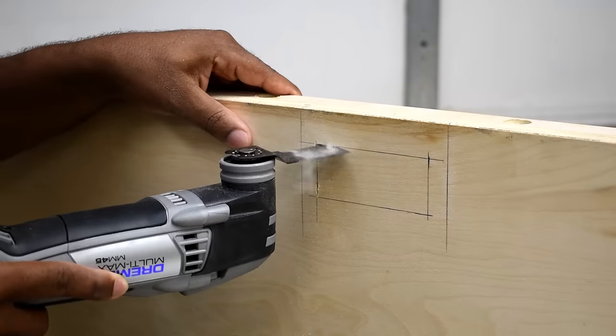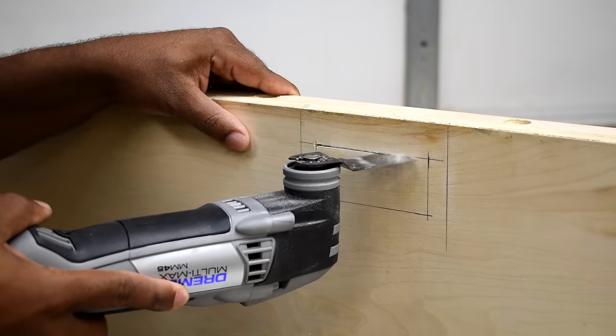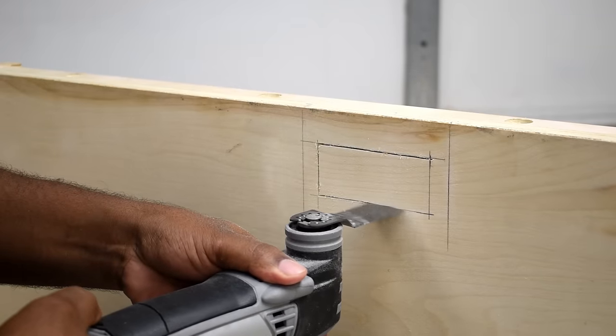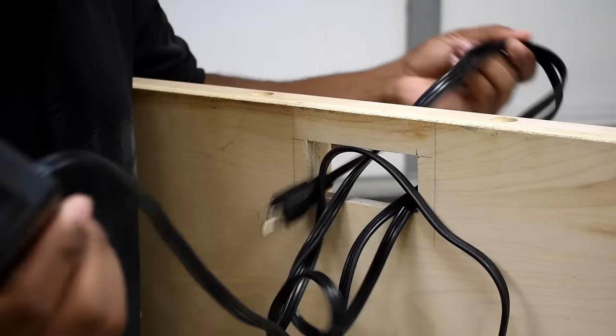After cutting out the hole, I wanted to make sure that everything fit nice. Even though I'm using a Dremel Multimax for this cutout, you can also use a jigsaw and that works just as well. With the hole cut out, I just need to do a test fit.